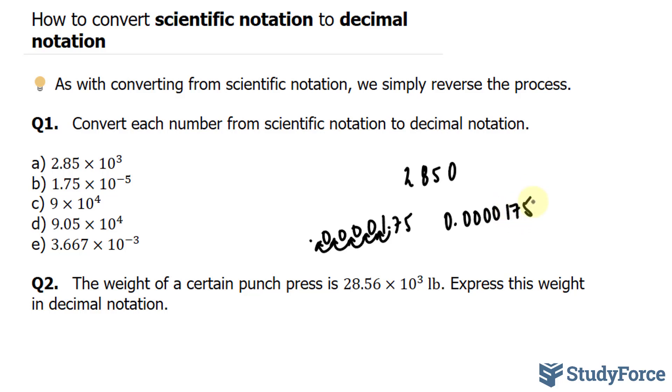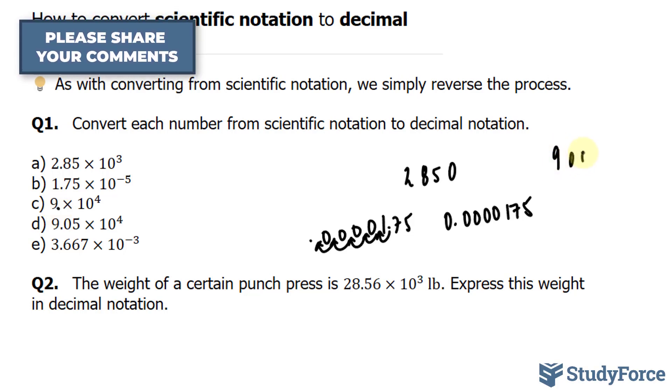In question C we have 9 times 10 to the power of 4. This is one significant figure. Our final answer should also have one significant figure, although we won't have a problem. All we have to do is move this decimal place, which is not written here but should be after this 9, move it 4 times to the right. And that should give us 90,000.